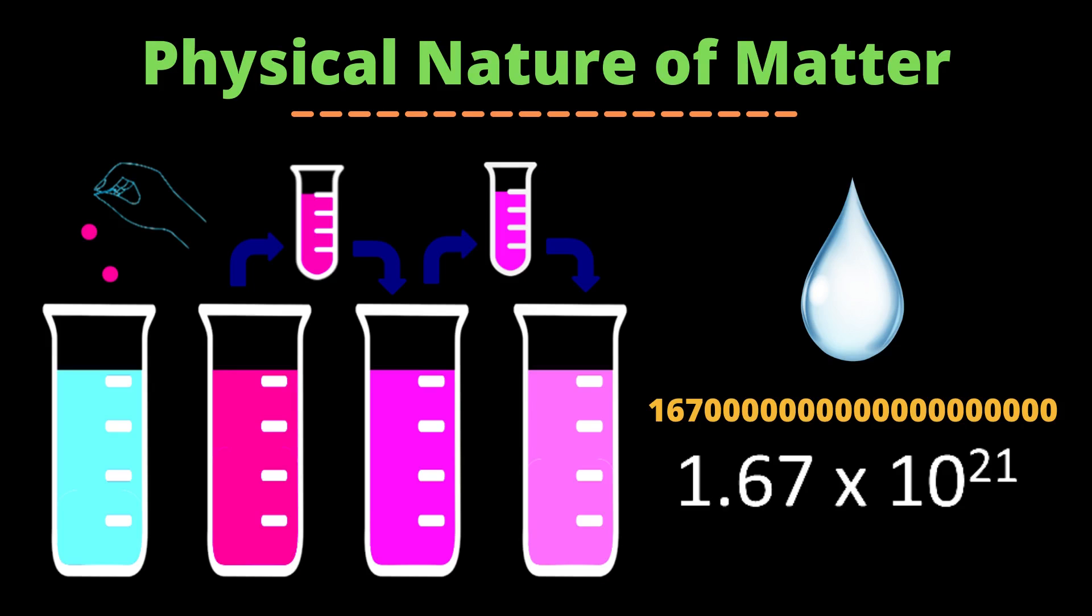Particles of matter are very tiny. By a simple experiment, we can know how small the particles of matter are. For that, add two or three crystals of potassium permanganate to 100 ml water. Take 10 ml of the solution and add it to 90 ml of clear water.